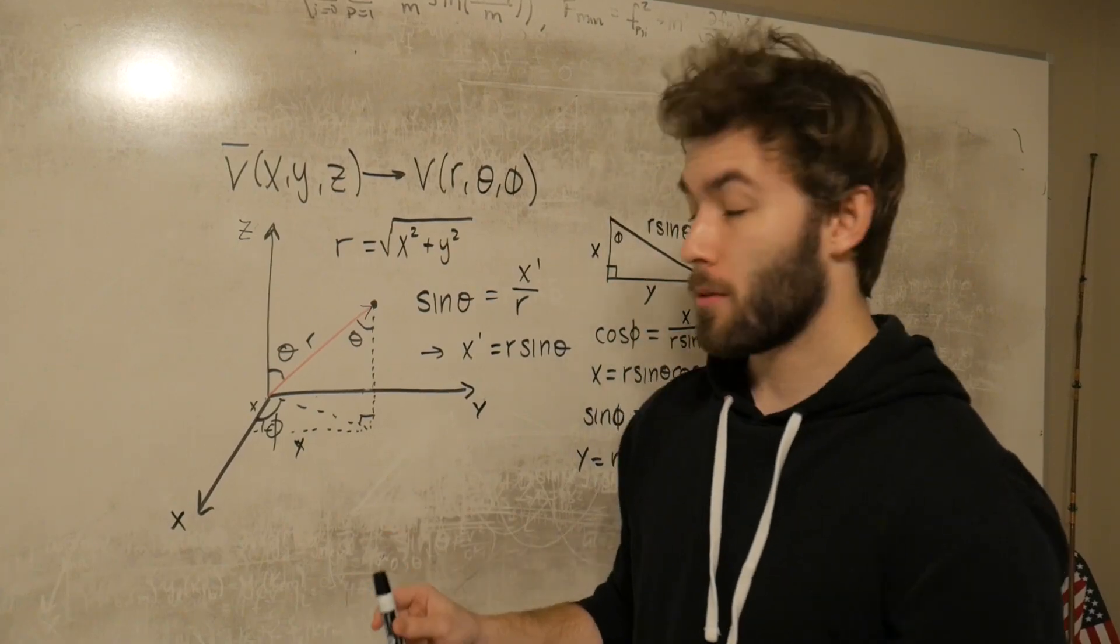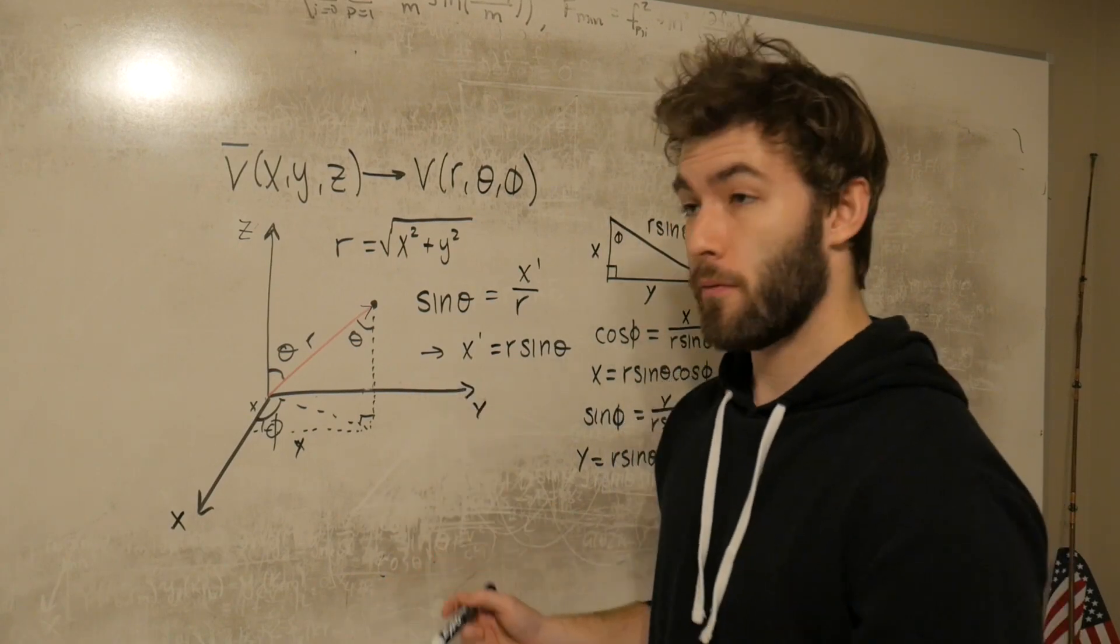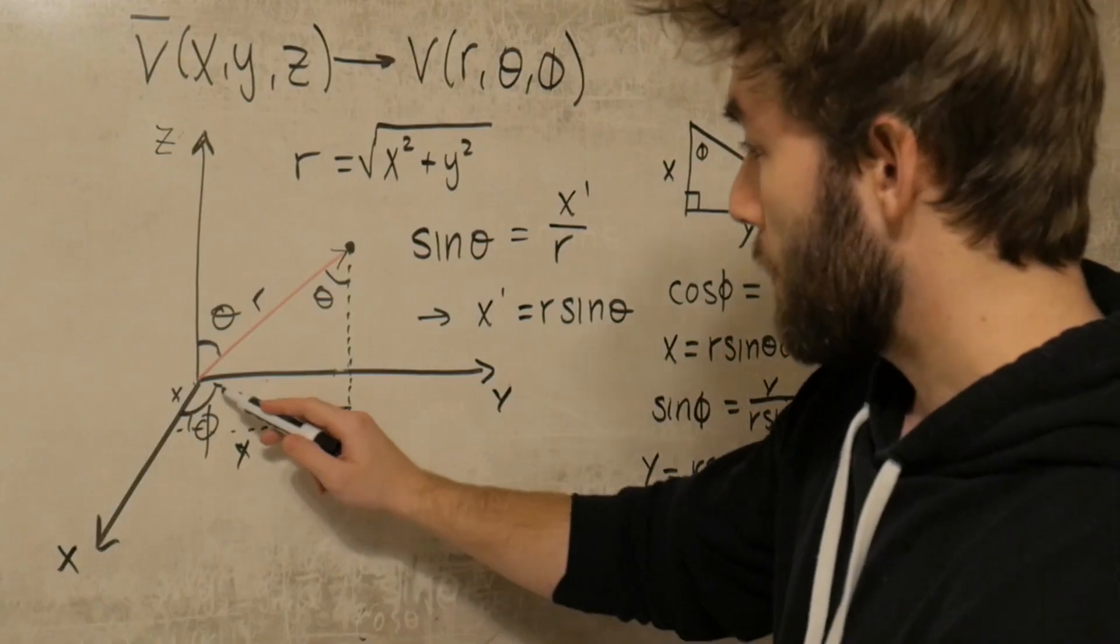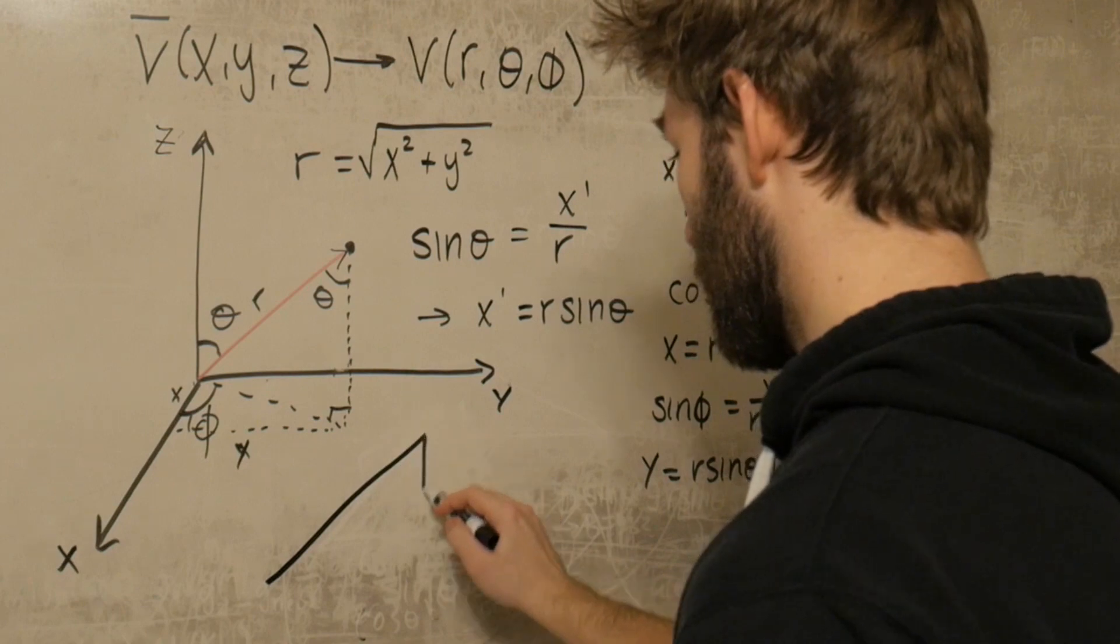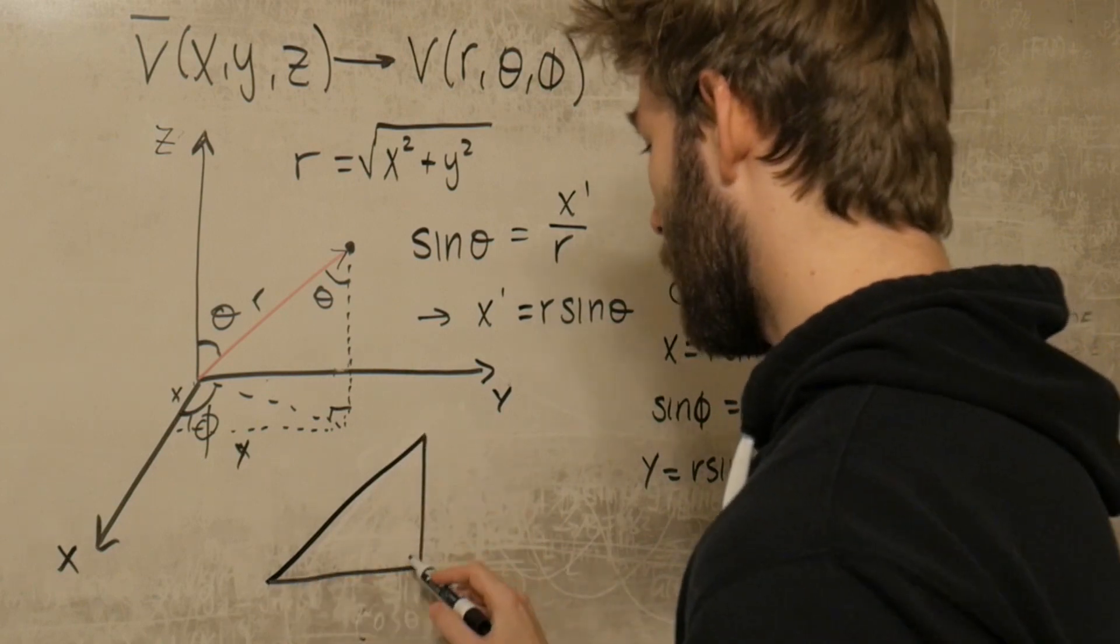The last component that we're going to find is actually the easiest one to solve for, the z component. So if we blow up this upper triangle here, so that we can see it better, draws it smaller, okay.